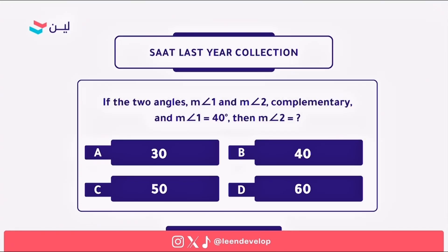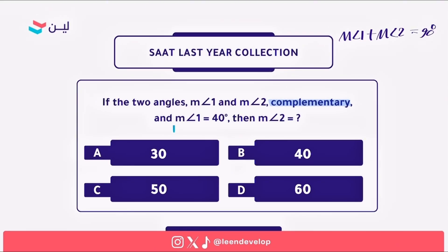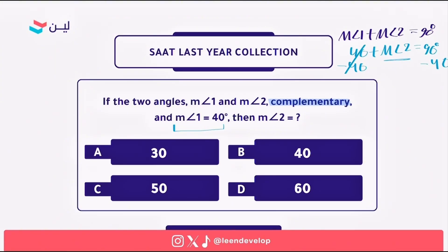The next question: if angles m1 and m2 are complementary and m1 equals 40 degrees, then m2 equals what? Complementary means the sum of m1 and m2 equals 90 degrees. Replacing m1 with 40: 40 plus m2 equals 90. Subtracting 40 from each side gives m2 equals 50 degrees. The correct answer is C.